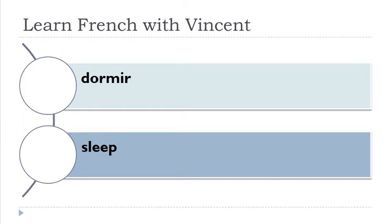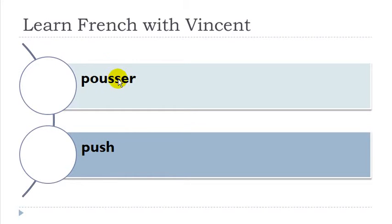Dormir. Pousser. Remember: one vowel, one vowel, and then double 's' here — so the sound you should produce is really strong: 's', 's'. Pousser.